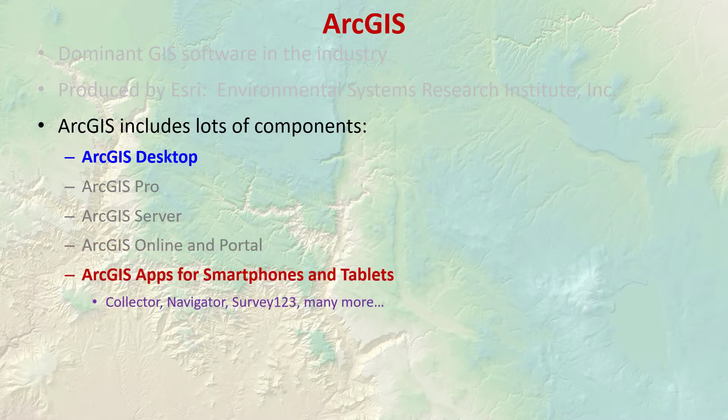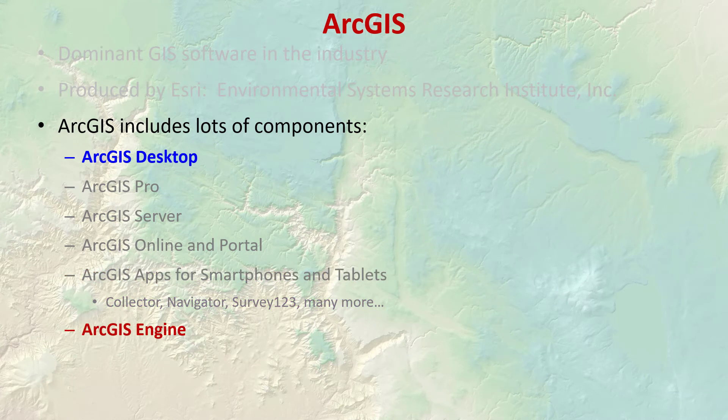There's ArcGIS for smartphones, tablets, and mobile devices — lots of different apps that provide simple GIS functions on your phone or tablet. They're usually free to download but they have to connect with an ArcGIS Server installation somewhere. You might have heard of Collector — that's been a really popular one lately. There's also ArcGIS Engine, which is pretty much ArcGIS Desktop but without the user interface. It's software components that developers and code writers can use to build their own software, containing all the internal ArcGIS objects.